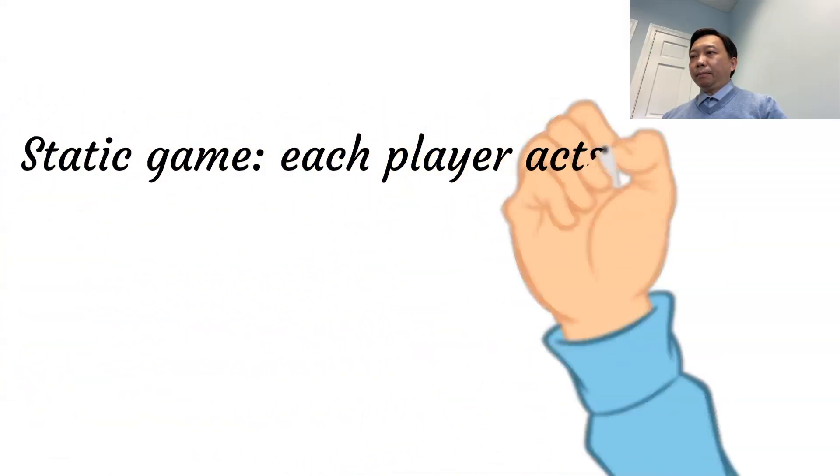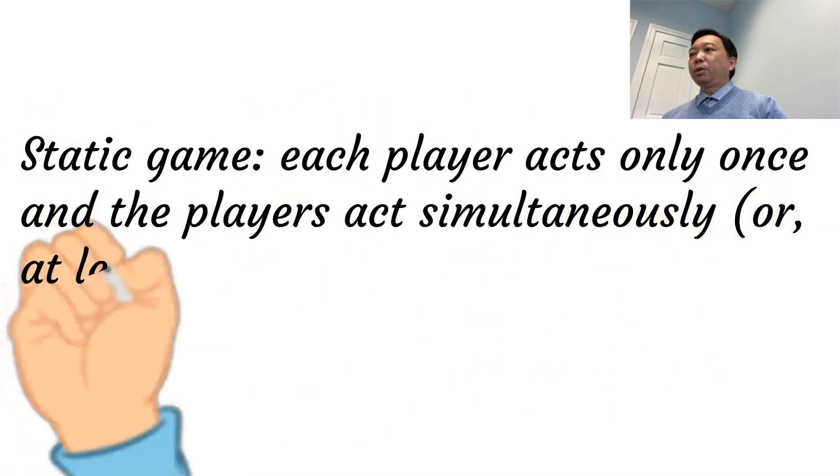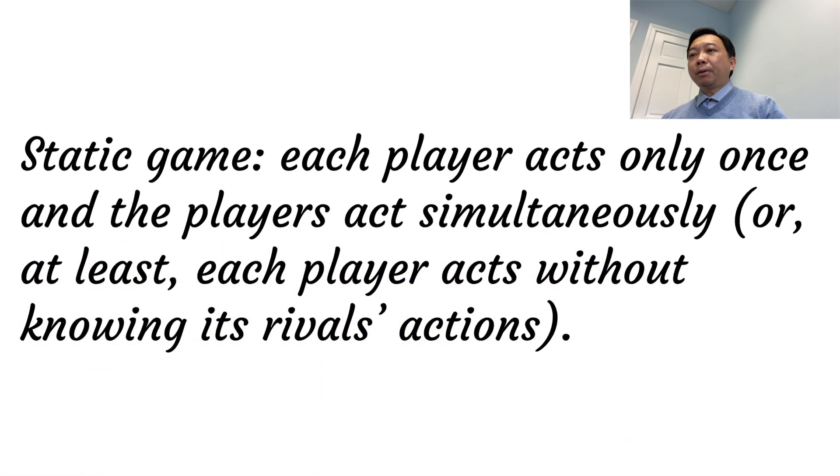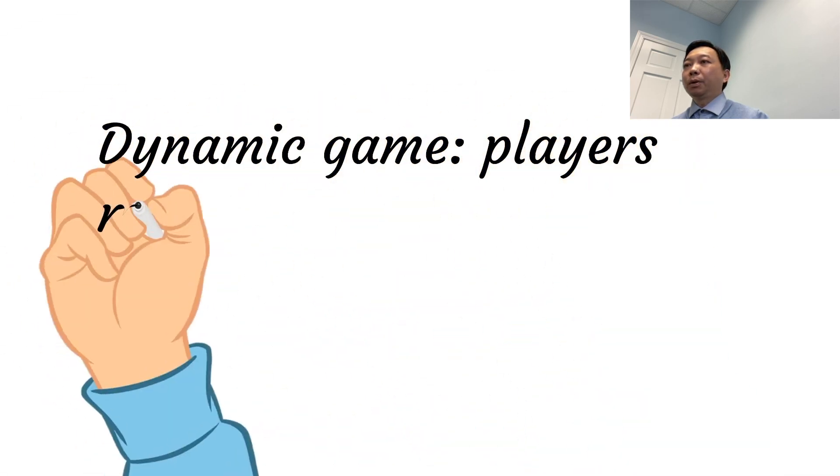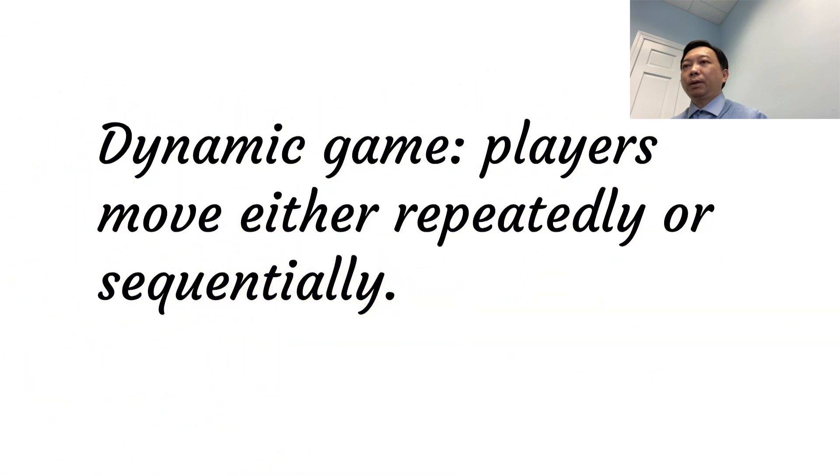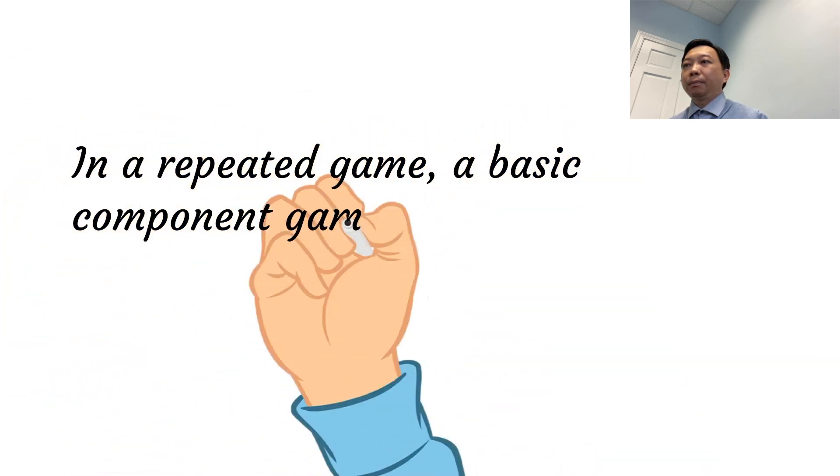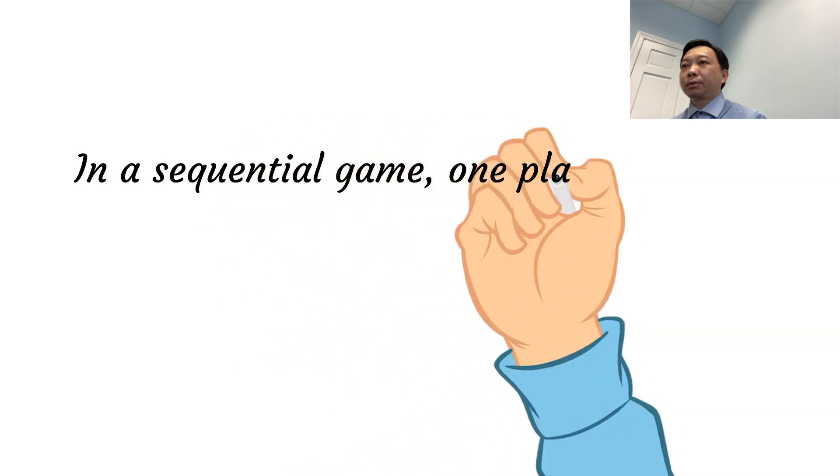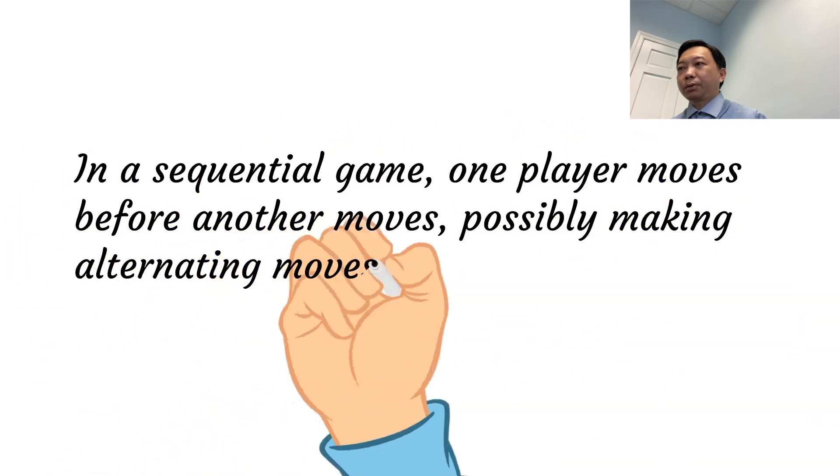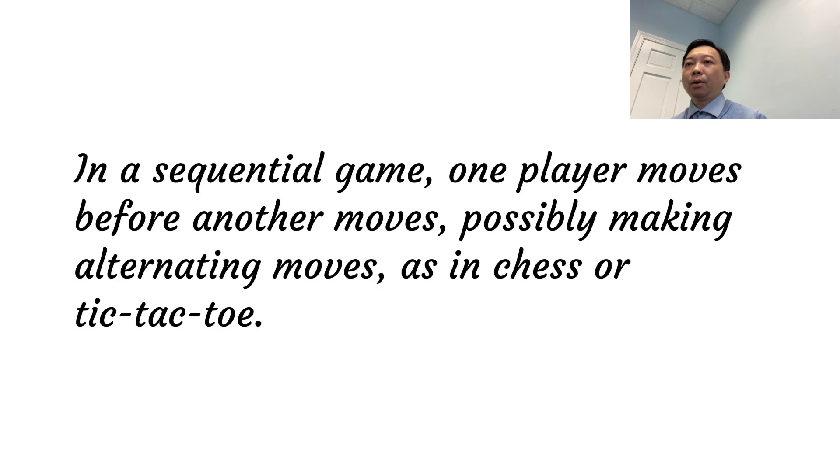In a static game, each player acts only once and the players act simultaneously, or at least each player acts without knowing its rival's actions. In a dynamic game, players move either repeatedly or sequentially. In a repeated game, a basic component game is repeated, perhaps many times. In a sequential game, one player moves before another moves, possibly making alternating moves, as in chess or tic-tac-toe.